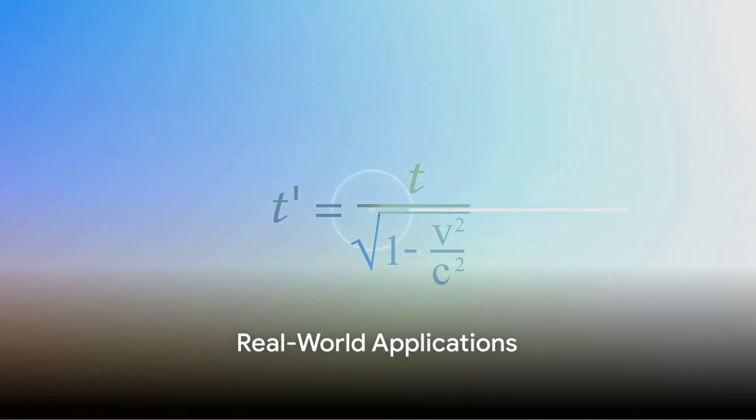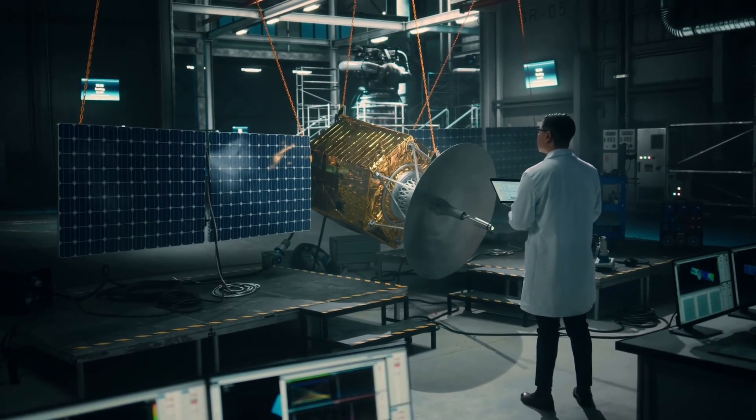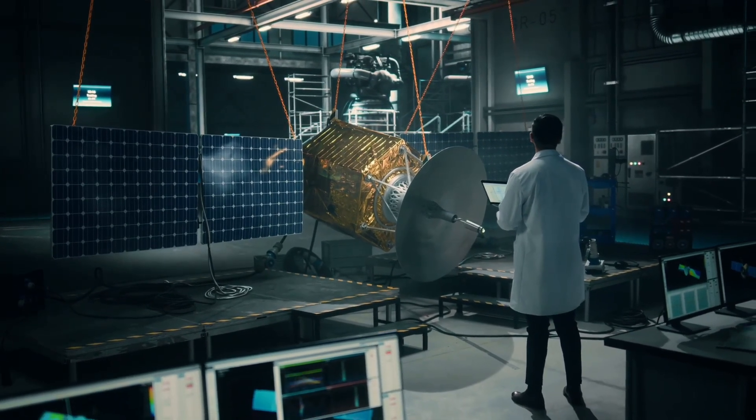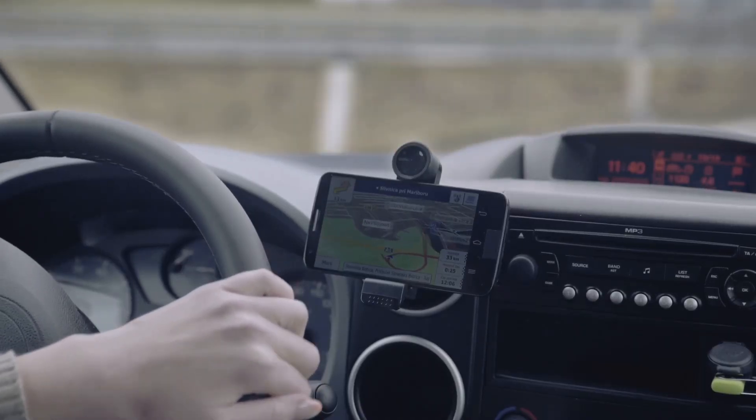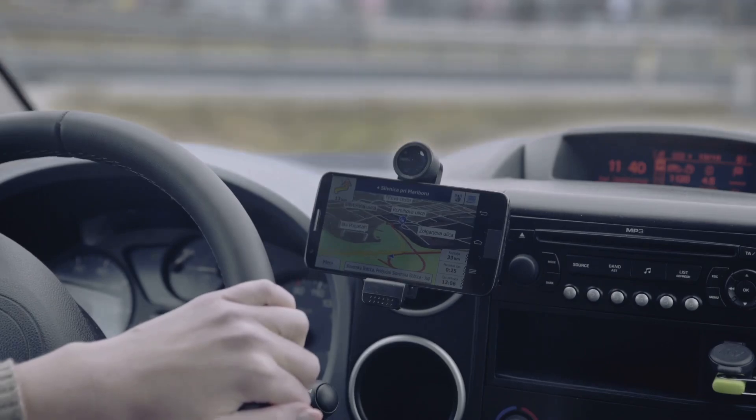This is not a mere intellectual exercise. The theory of relativity has real-world applications that we use in our daily lives. For example, the GPS technology in our smartphones relies on the principles of relativity to function accurately. Without accounting for time dilation, GPS signals would accumulate errors of about 7 km per day.